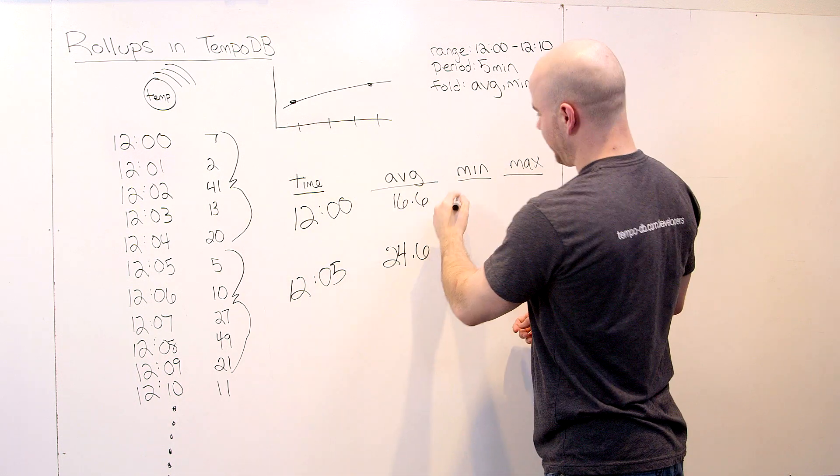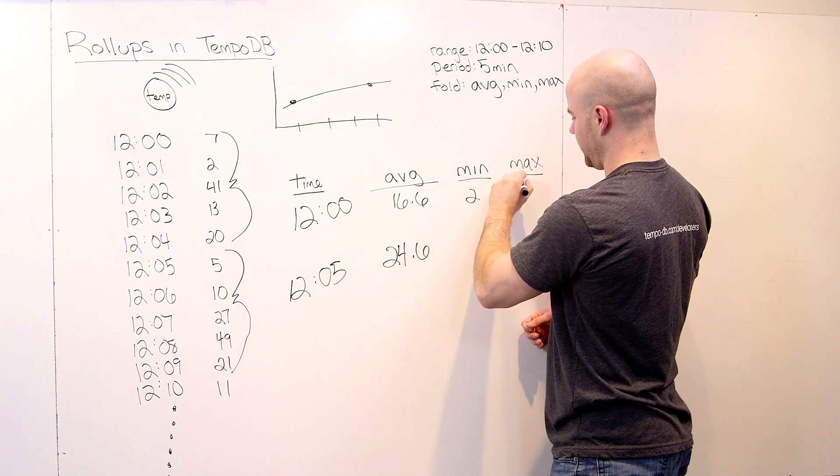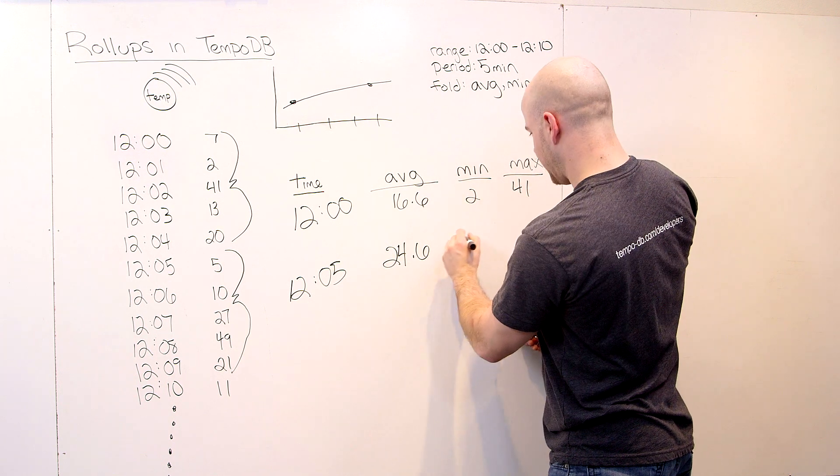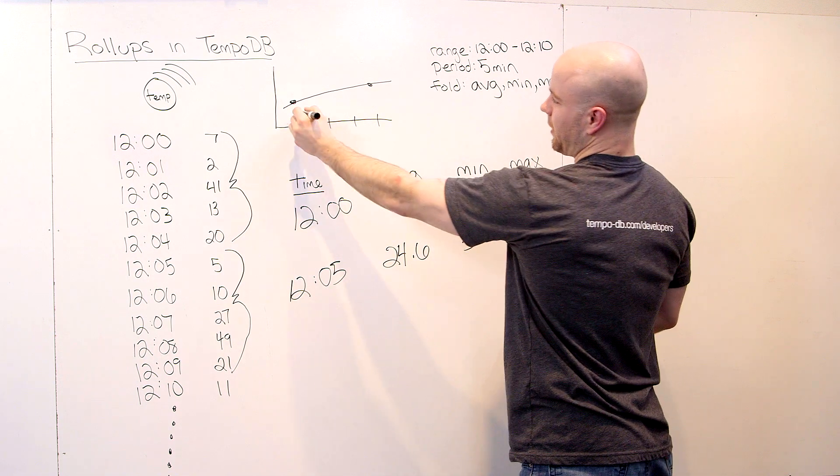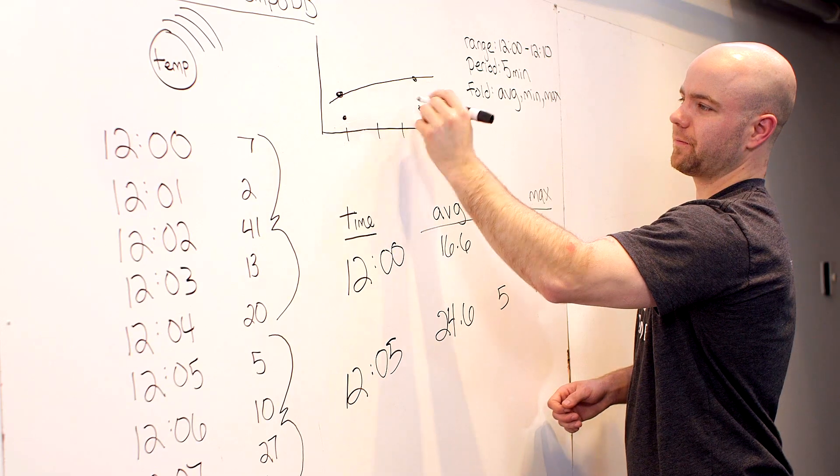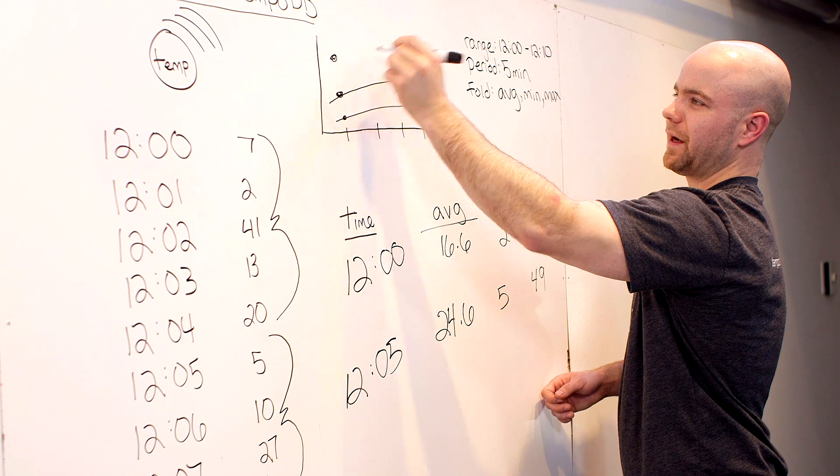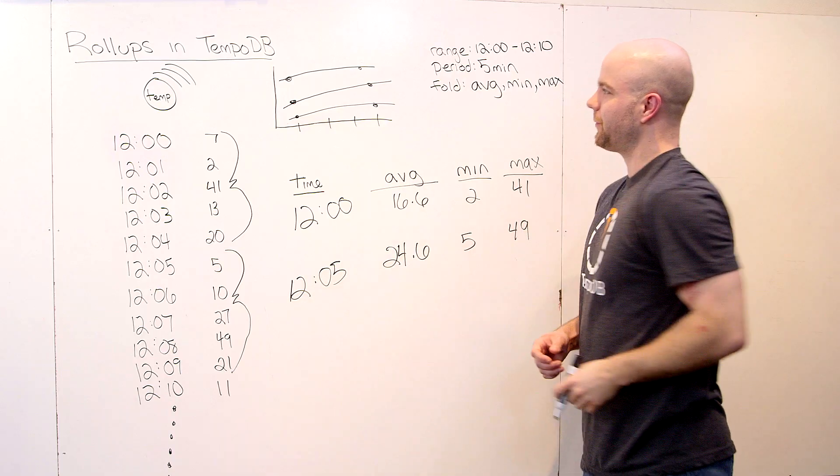And you'll get whatever those values are. It should be two and 41, five and 49. And likewise, you could plot those next to each other on your chart, get this nice compound line graph, however that would end up looking.